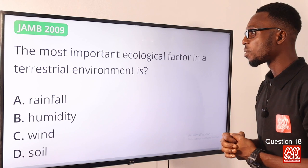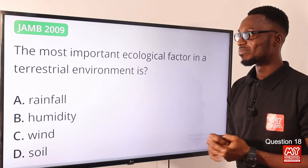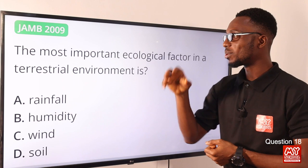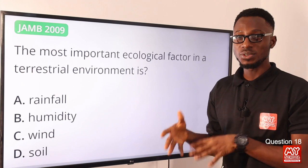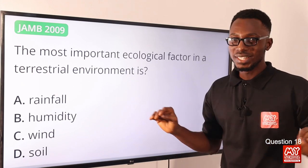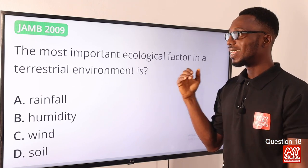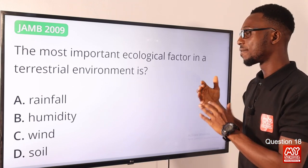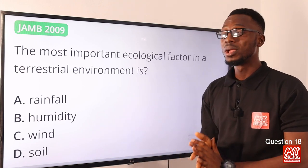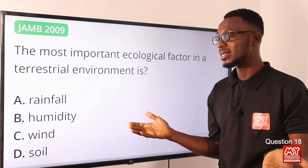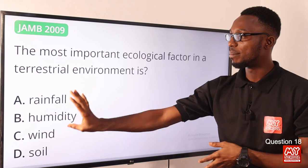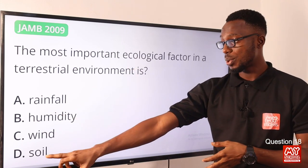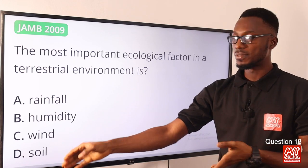Question eighteen: the most important ecological factor in a terrestrial environment is what? On land, the soil and land surface are essential — without them there is no terrestrial environment. Other abiotic factors like rainfall, temperature, relative humidity, pressure, pH, and wind are important, but based on the options provided, soil or land surface is most important. Option D is the correct answer.